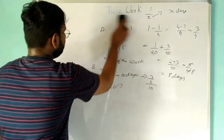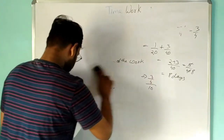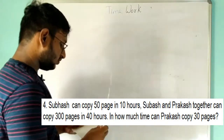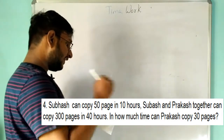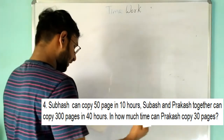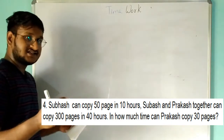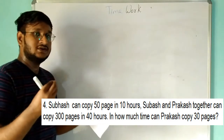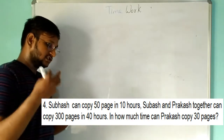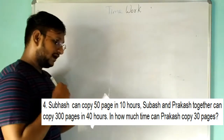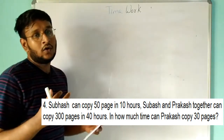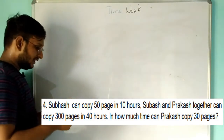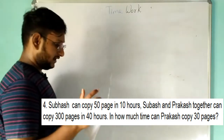Fourth problem: Subhash can copy 50 pages of a book in 10 hours. Subhash and Prakash together can copy 300 pages in 40 hours. In how much time can Prakash copy 30 pages? First, Subhash copies 50 pages in 10 hours, so in one hour he copies 50/10 = 5 pages.